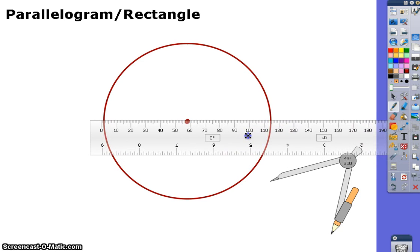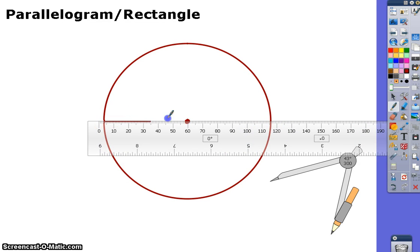We know the diagonals of a rectangle are congruent, so by drawing its two diagonals,